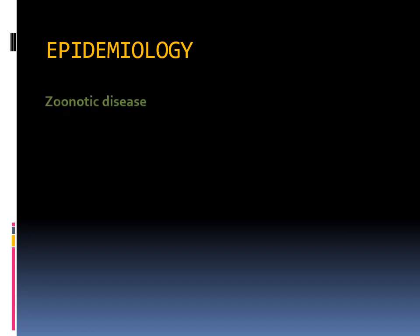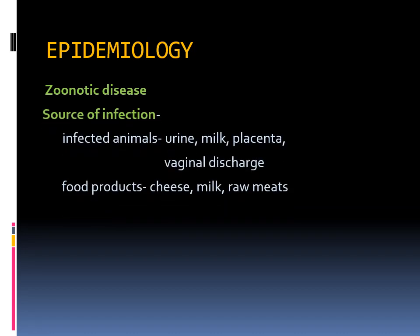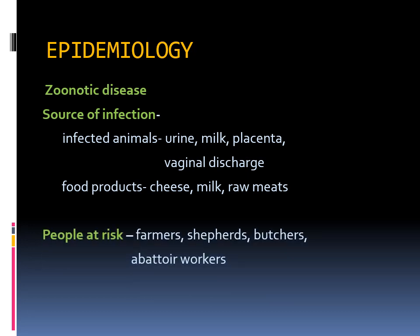Regarding epidemiology, Brucella causes a zoonotic disease — the pathogen is present mainly in animals, which serve as reservoirs. When humans come in contact with them, they can acquire the infection. Sources of infection include infected animals and any discharge such as urine, milk, placenta, or vaginal discharge, as well as food products like cheese, unpasteurized milk, and raw meat. People at risk include farmers, shepherds, butchers, and abattoir workers — all those who come in contact with animals or animal products.